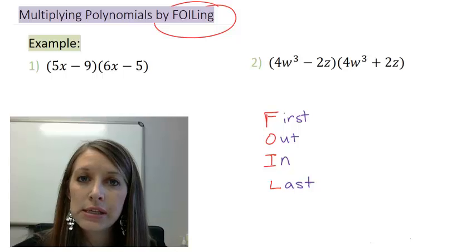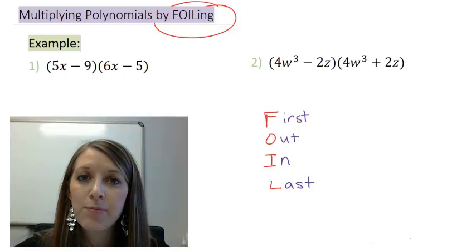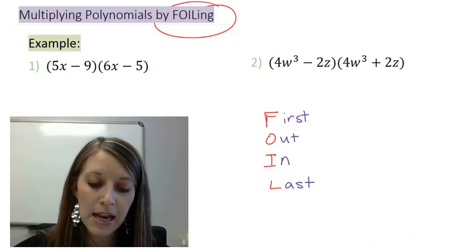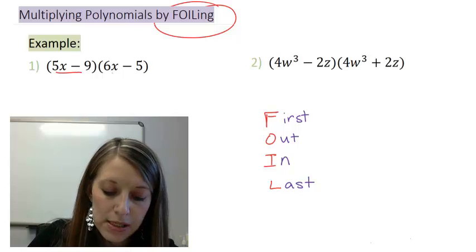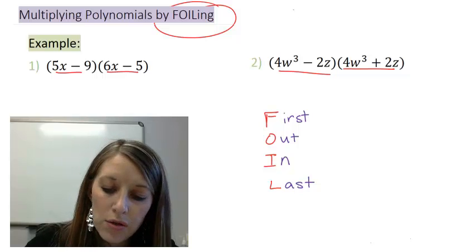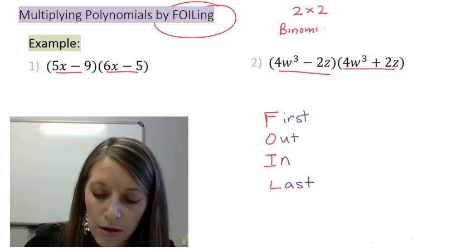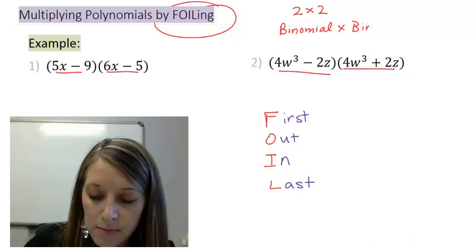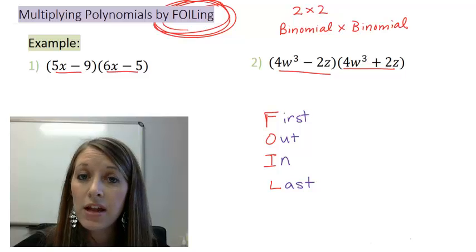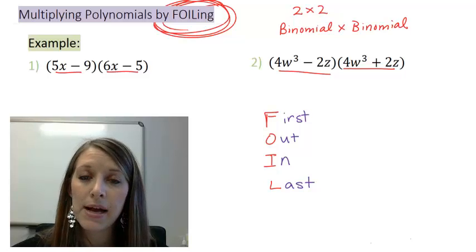Now, I'm only going to use this keyword FOILing or FOIL when I have two very specific types of polynomials multiplied by each other. And we can hopefully pick that out in my two examples that I've given you here. I have two terms here and two terms there. Same thing in example two. Two by two. So this needs to be a two by two or, since we know those vocabulary words, it needs to be a binomial times a binomial. If it is, that's when we get to use the word FOILing. If it is not a binomial times binomial or if it is not a two by two, this is not the process that we're going to use.